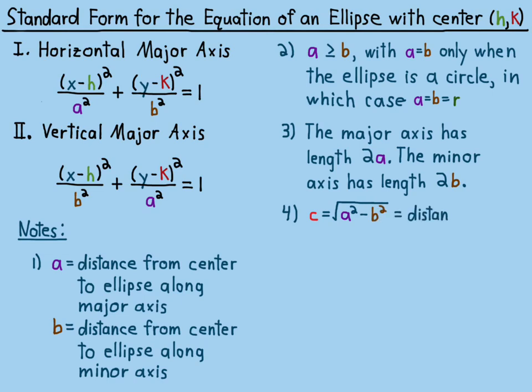c is the distance from the center of the ellipse to the foci along the major axis — so the foci are on the major axis, as are the vertices. The formula for c is: c = √(a² - b²). Since a is always greater than or equal to b, this is always a real number. In the case of a circle, c equals zero because a equals b.